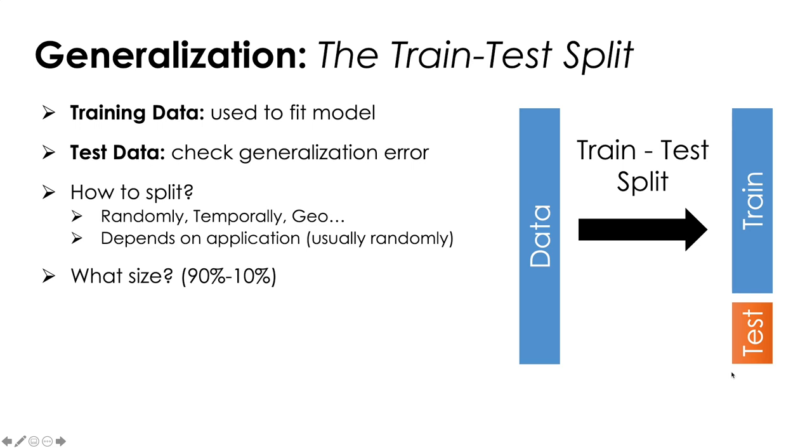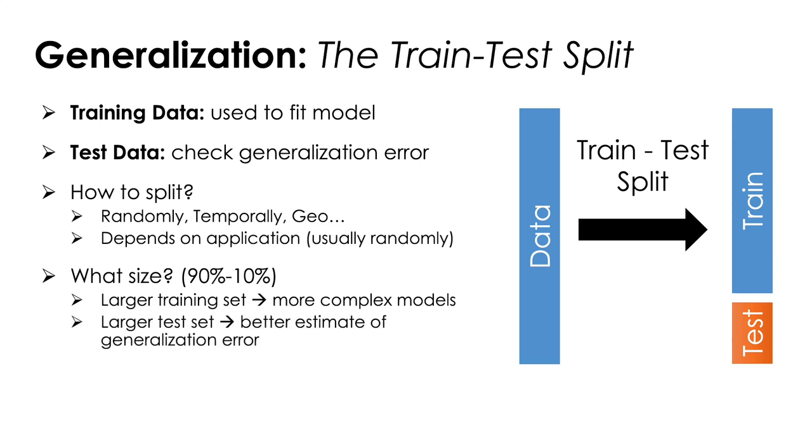There's a trade-off that we have to consider. If we make the training set larger, if we keep more data for training, then we can typically support more complex models and be able to distinguish between noise in our data and the underlying phenomena we're trying to model. Unfortunately, as we make the test set really small, we're going to get pretty crude estimates of our test accuracy. If you imagine we just have one data point, any variability in that one data point could make a really good model look really bad. So we also have this trade-off—we'd like to keep the test set large enough that we can get a good estimate of the test quality of our model. Somewhere between around 75% training to 90% training and therefore 25% to 10% test. This can vary across applications.